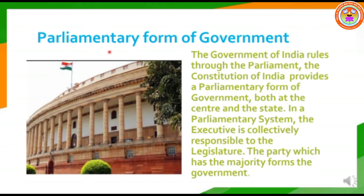We are going to learn about the parliamentary form of government in India. The government of India rules through Parliament. The Constitution of India provides a parliamentary form of government both at the centre and state, in which the Prime Minister and other ministers are selected by the legislature. In a parliamentary system, the executive is collectively responsible to the legislature, and the party which wins the majority forms the government.